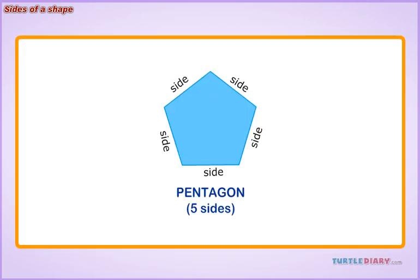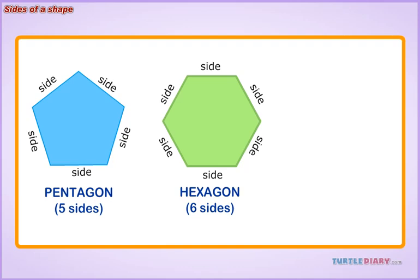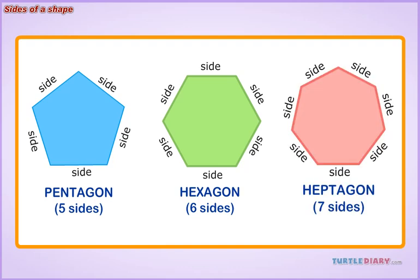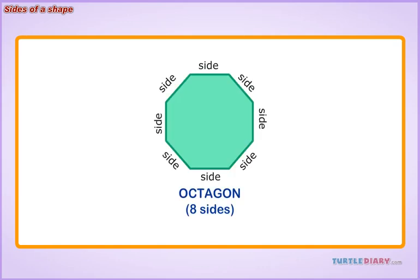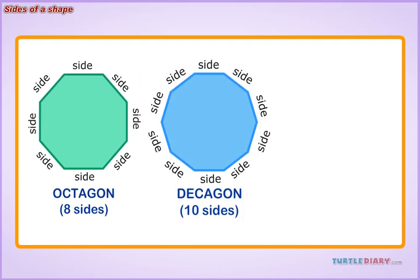Pentagon: Five Sides. Hexagon: Six Sides. Heptagon: Seven Sides. Octagon: Eight Sides. Decagon: Ten Sides.